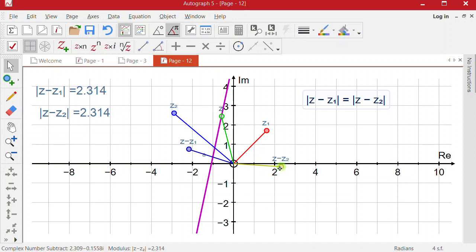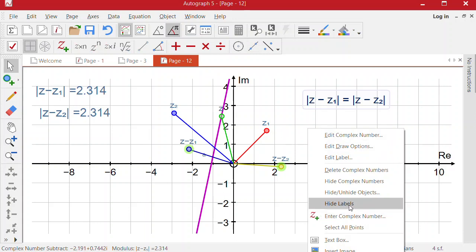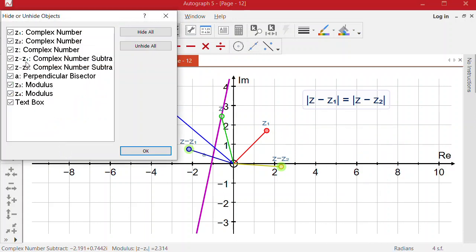I don't need these anymore, so if I select those two, it doesn't look so cluttered. I'll right click and hide objects, so I want to hide those two.